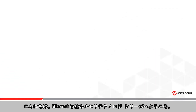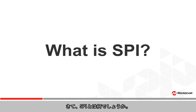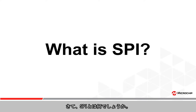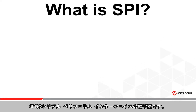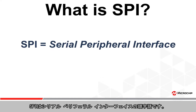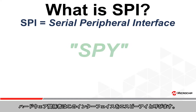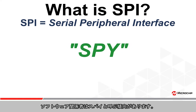Hello and welcome again to Microchip's memory technology series. So what's SPI? SPI is an acronym for Serial Peripheral Interface. Hardware folks will refer to the interface as SPI, while software folks will tend to say SPI.